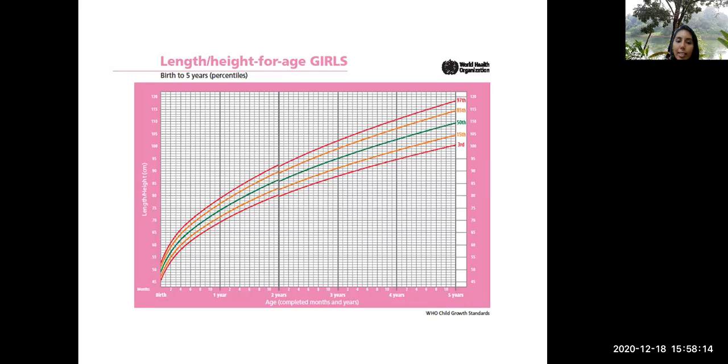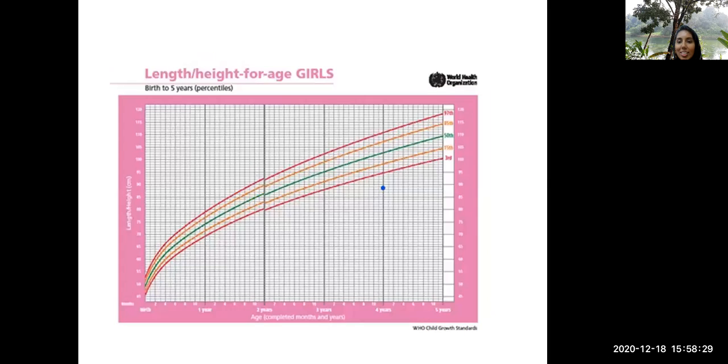About the height of this child, I've taken the height for age charts, WHO charts for girls, zero to five years. Where will it come once if I plot? So please plot it and check whether your answer is this one. If you are getting this answer, yes, you are right.